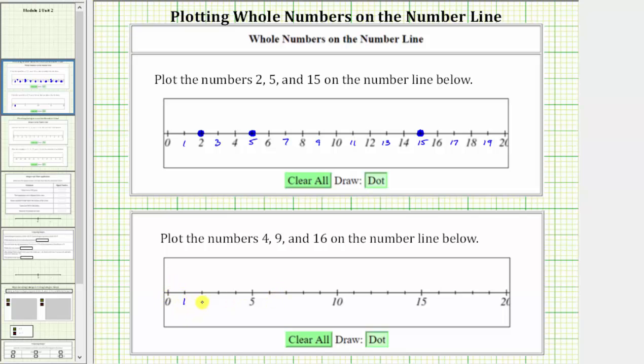We would have zero, one, two, three, four, five, six, seven, eight, nine, ten, and so on.